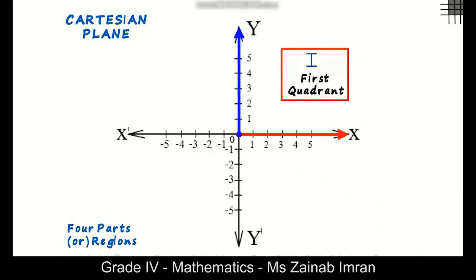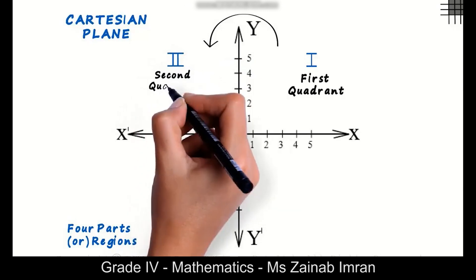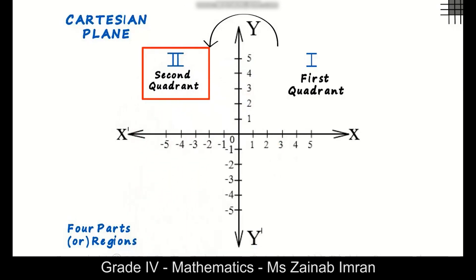Moving in the anti-clockwise direction, we name this quadrant the second quadrant. In this quadrant, the x-coordinates are negative while the y-coordinates are positive. So remember, for the first two quadrants, the y-coordinates are positive.